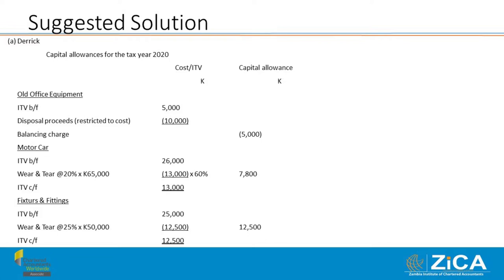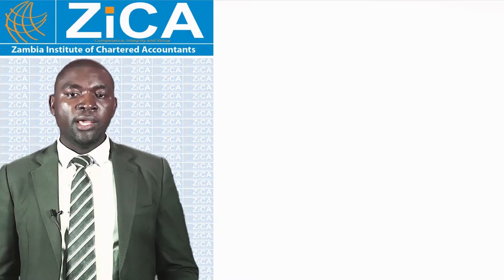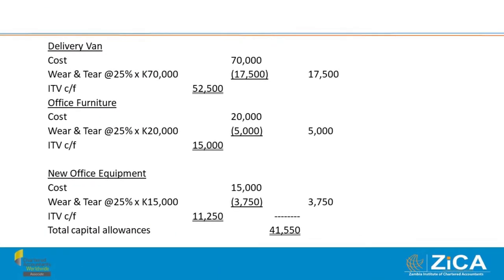For the motor car: income tax value at the beginning was 26,000 kwacha, but original cost is 65,000 kwacha. Capital allowances are claimed on original cost, restricted to business use — since 40% is private use, we claim only 60% for business purposes. For fixtures and fittings: we claim capital allowances on the original cost at 25%. For the new delivery van (acquired during the year): we start from cost and claim at 25% (commercial vehicle). For new office furniture: we claim wear and tear at 25% from cost of 20,000 kwacha. For new office equipment costing 15,000 kwacha: wear and tear at 25%. After adding all allowances and deducting the balancing charge on the old office equipment disposal, total capital allowances claimable by Derek for tax year 2020 come to 41,550 kwacha.